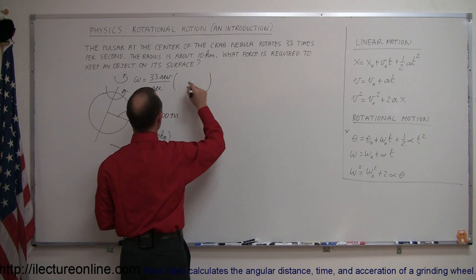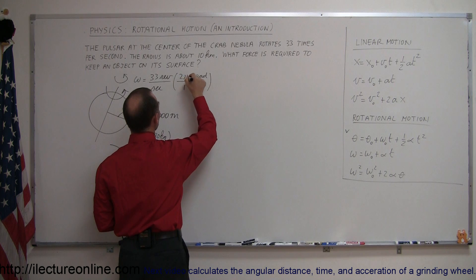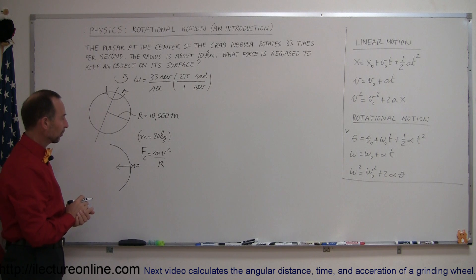So omega, first of all, we're going to convert from revolutions per second to radians per second. One revolution is 2π radians, so that's how we convert omega from revolutions per second to radians per second.